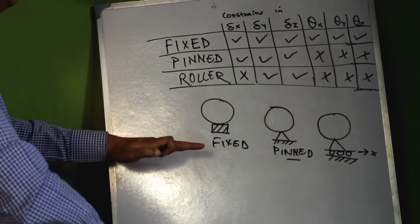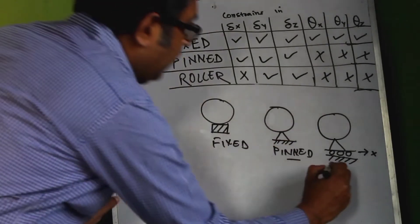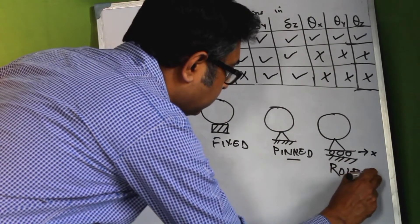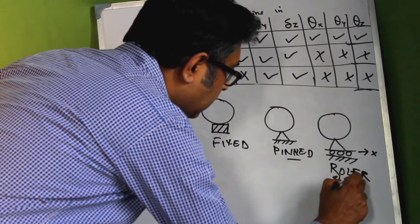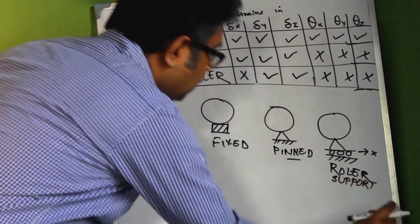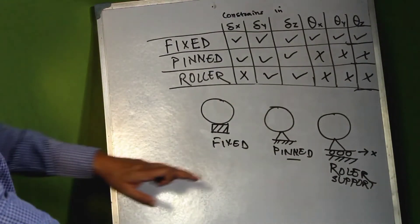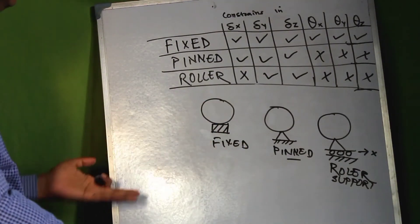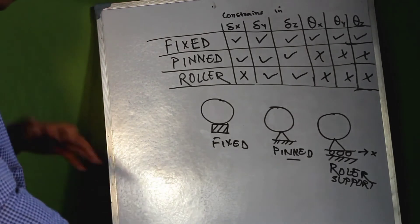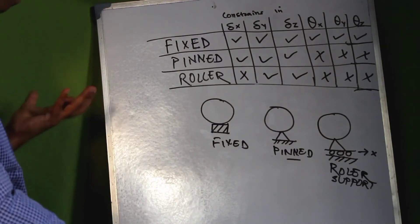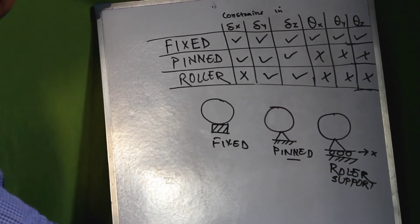So that is the concept of the fixed, pin, and roller supports. There is no direct way to represent a roller support in STAAD.Pro, but there is a support type called fixed pin, and we can use this fixed pin to define a roller support.